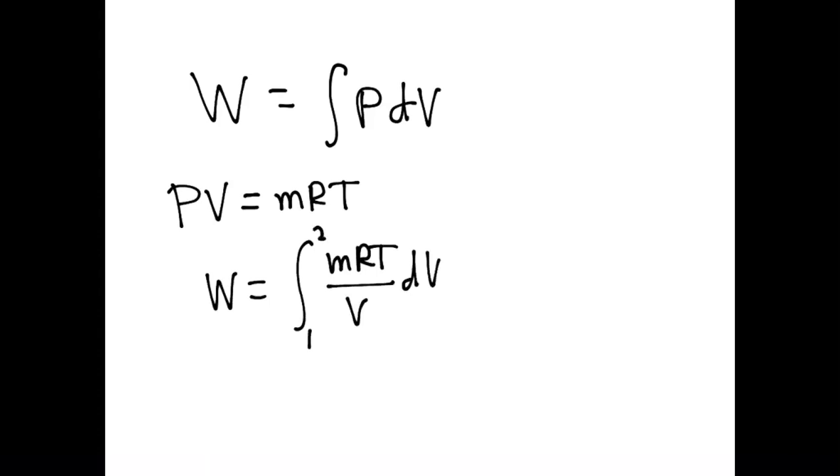Since the mass, the constant, and the temperature are constants, we can get them out of the integral, and then we can have 1 over V dV. This will lead to a natural logarithm.